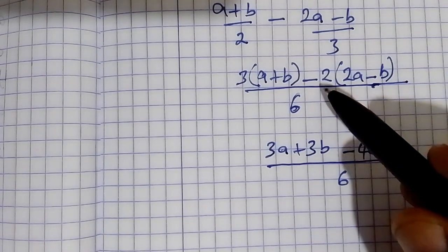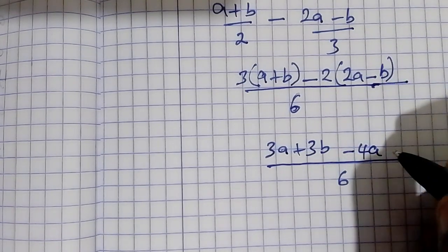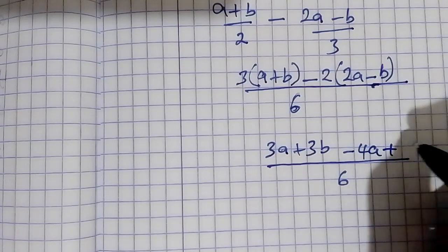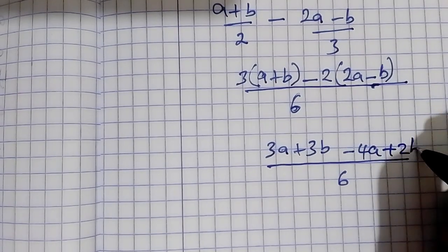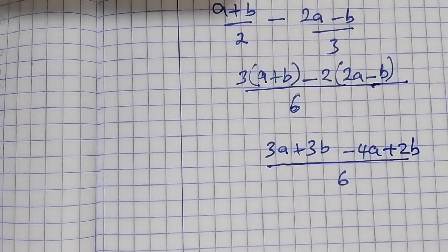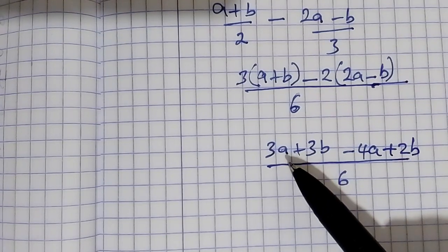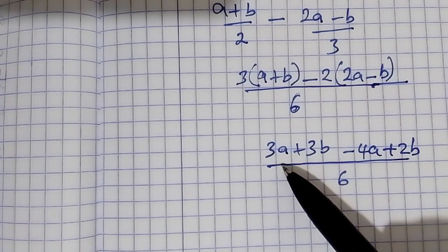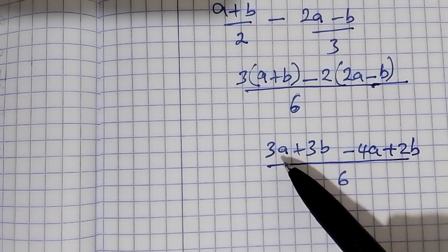Minus 2 times minus b is plus 2b. Now we put the like terms together.